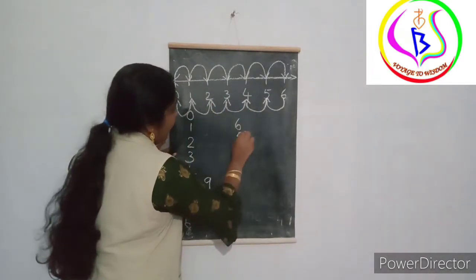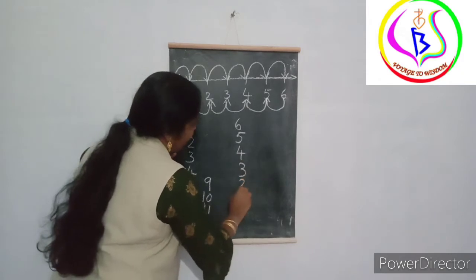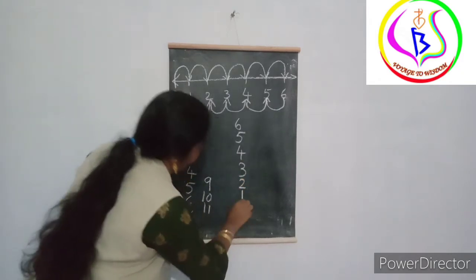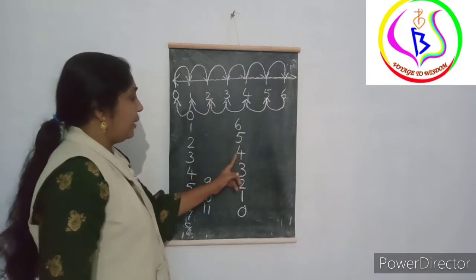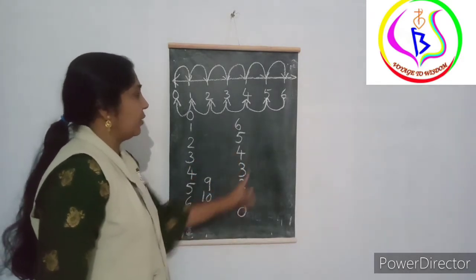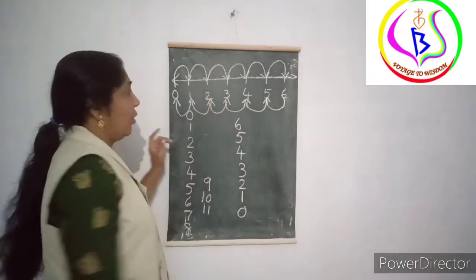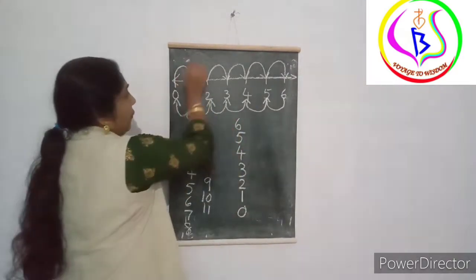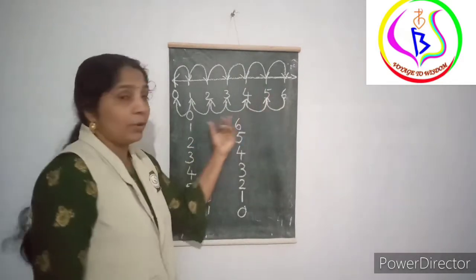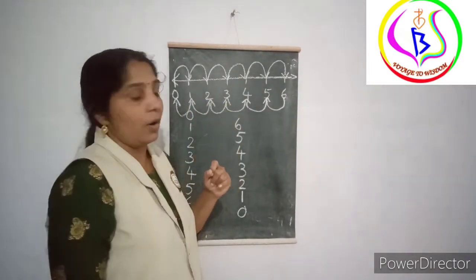Decreasing order: 6, 5, 4, 3, 2, 1, 0. This is decreasing order. Forward counting is increasing order. Backward counting is decreasing order.